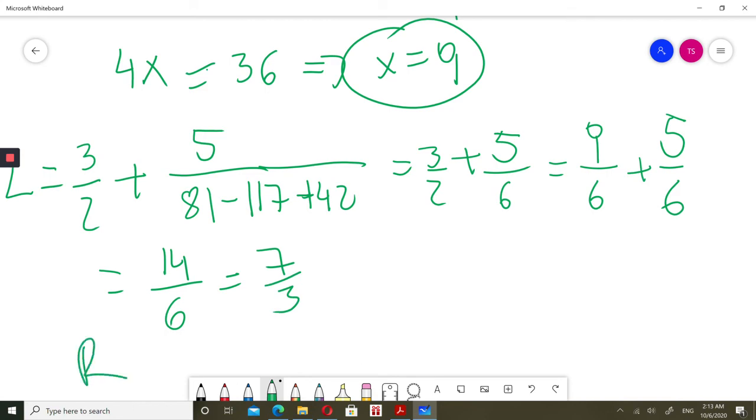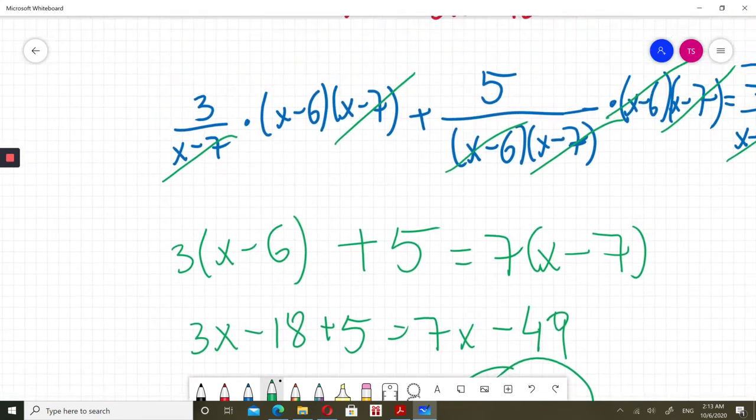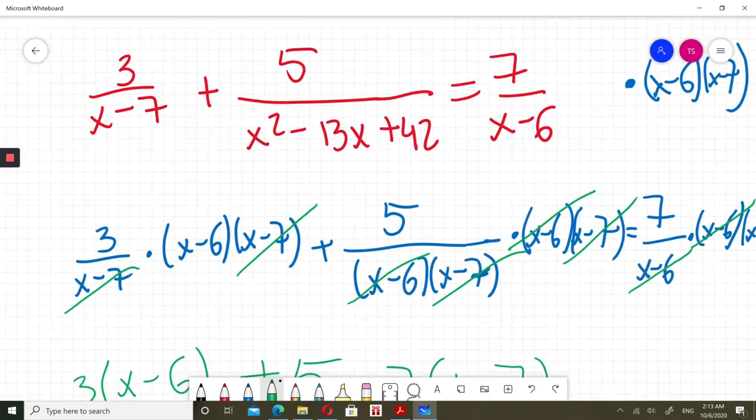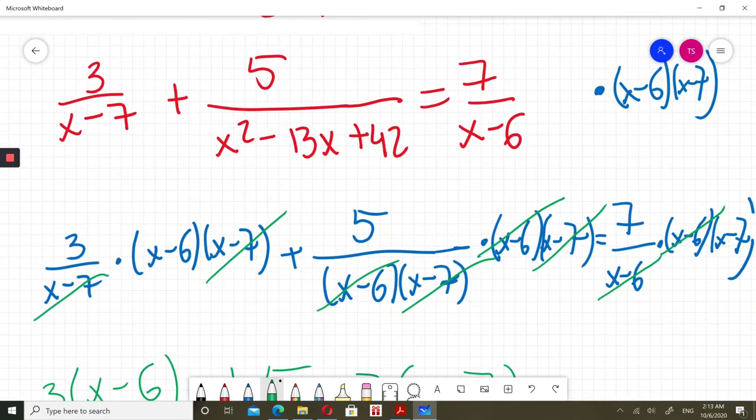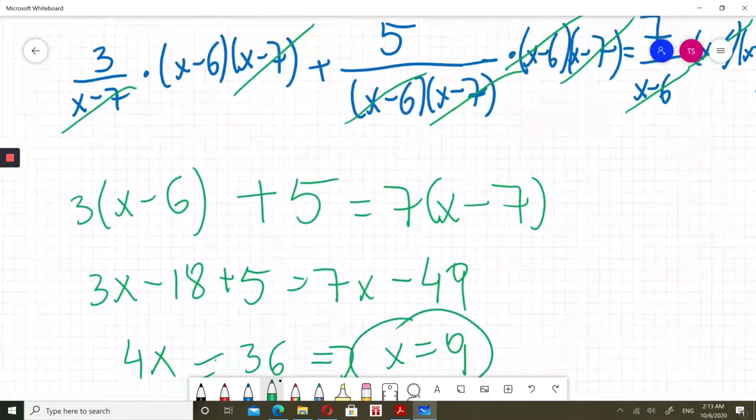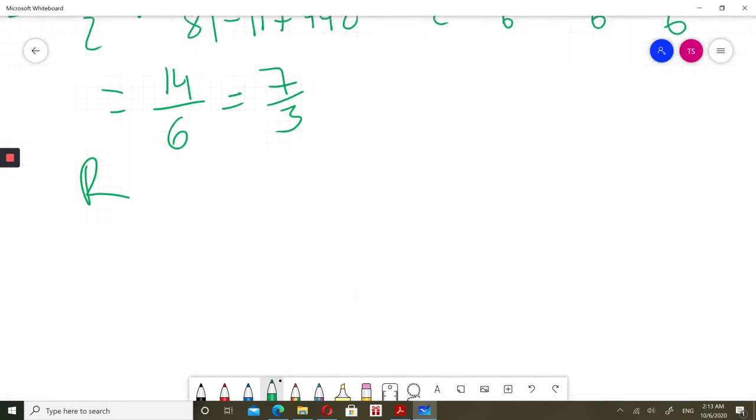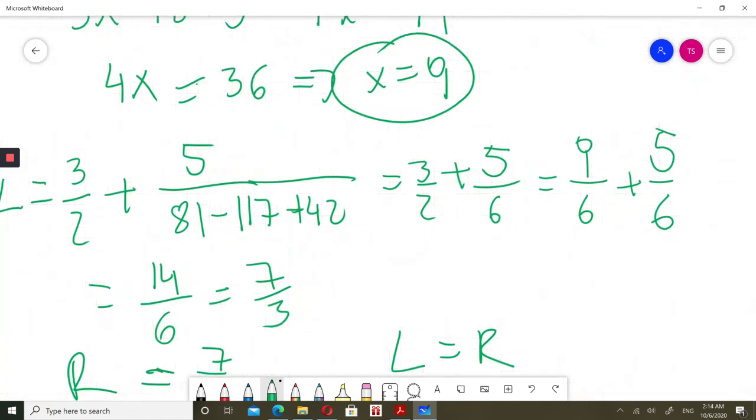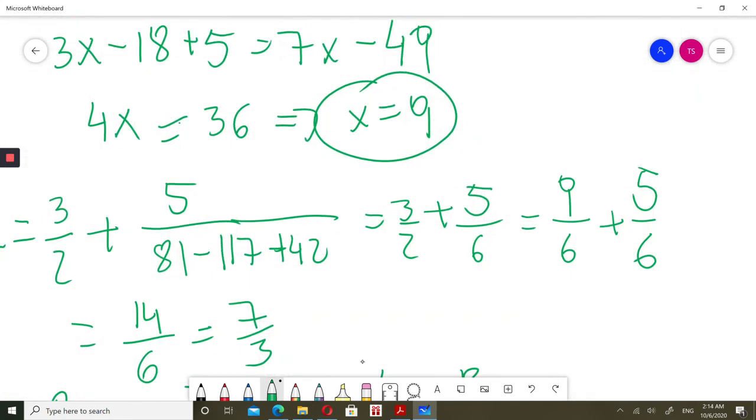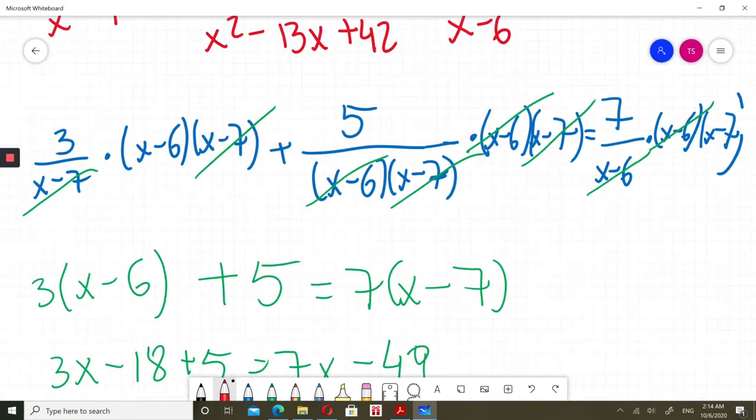And right side was just 7 divided by x minus 6. So 7 divided by 9 minus 6, 7 divided by 3. I just want to show you that we get the same. Left side equals right side for our x equals 9. So x equals 9, I even checked. This is a correct answer.